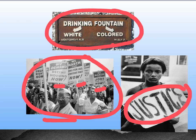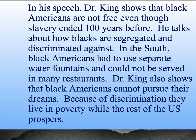Here in our third body paragraph, I'm going to use that P acronym again — make my point, bring in some evidence from the text, and then explain how it fits in. The topic sentence: "Here in his speech, Dr. King shows that black Americans are not free, even though slavery had ended 100 years before." He mentioned that 100 years in the very first part of the excerpt. He talks about how blacks are segregated and discriminated against, and in the South, black Americans had to use separate water fountains and could not be served in many restaurants. Dr. King also shows that black Americans cannot pursue their dreams — because of discrimination, they live in poverty while the rest of the U.S. prospers. This is a paraphrase of exactly what Dr. King was saying.